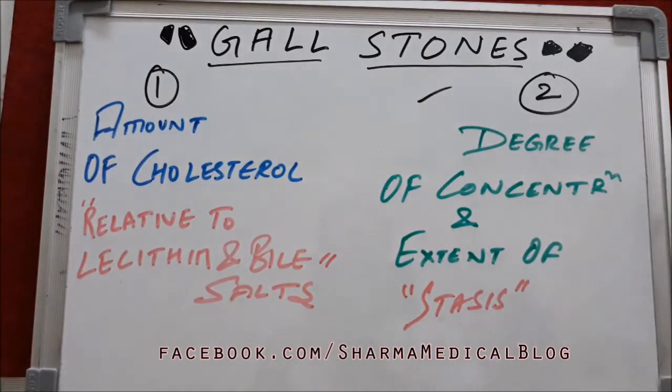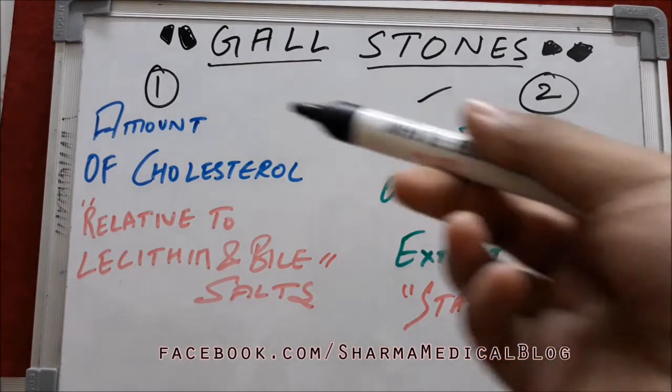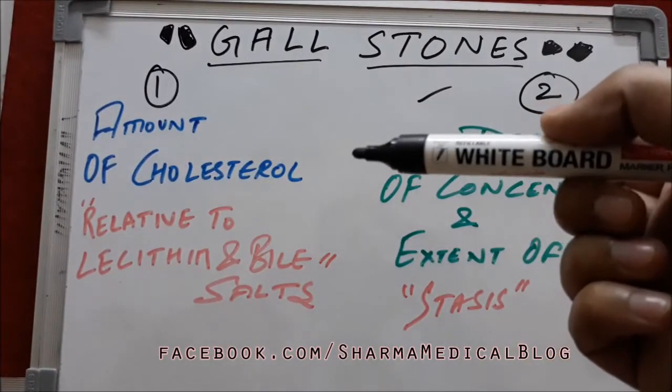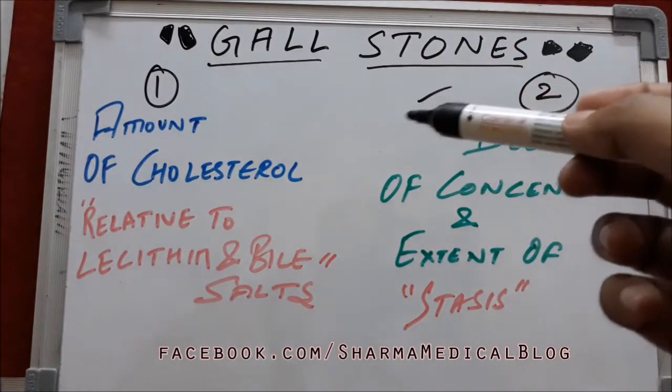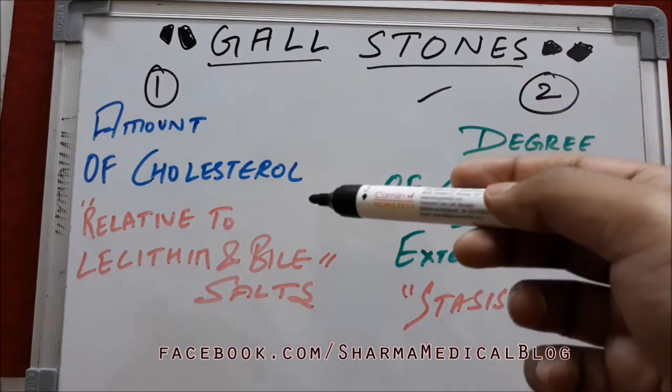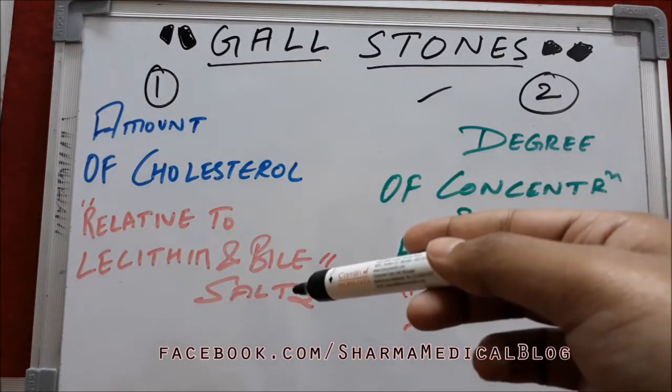First is the amount of cholesterol relative to lecithin and bile salts. You need to understand that cholesterol is secreted in the bile by the liver cells or hepatocytes, and lecithin and bile salts are part of the bile.